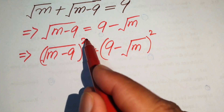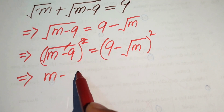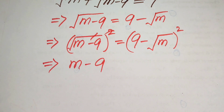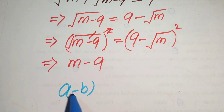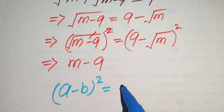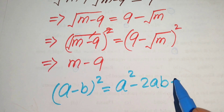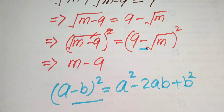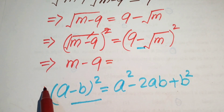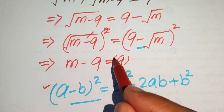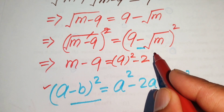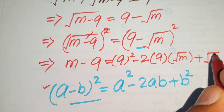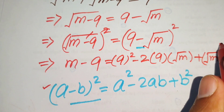On the left hand side, the square and square root cancel and we get m minus 9. On the right hand side we use the identity: a minus b whole squared equals a squared minus 2ab plus b squared. Here a is 9 and b is square root of m, so we write 9 squared minus 2 times 9 times square root of m plus square root of m whole squared.